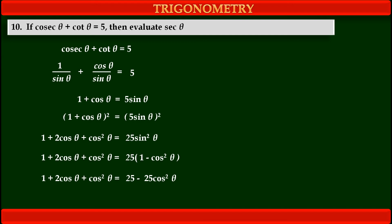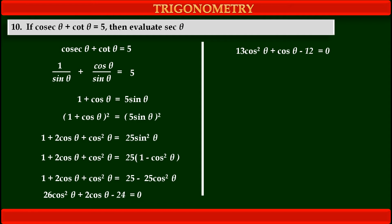Now, collecting the similar terms together and rearranging, we get 26 cos² θ plus 2 cos θ minus 24 is equal to 0. This is a clear quadratic equation with variable cos θ. There is a common factor of 2, so dividing each term by 2, we get 13 cos² θ plus cos θ minus 12 is equal to 0.